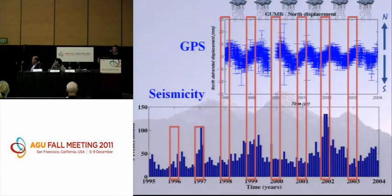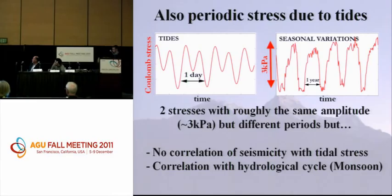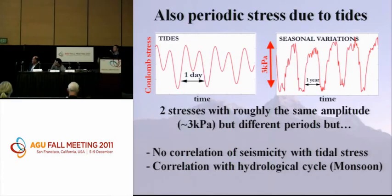The first is the seasonal variation — stress as a function of time, periodic with a period of about a year. The second is due to Earth tides — the moon and the sun also deform the crust and create stresses on the fault. In our case, those stresses are about the same amplitude as the monsoon, but the period is very different: only half a day or one day versus one year. We're talking about really tiny stress variations — about 3 kilopascal, which is roughly a hundred thousandth of the 500 megapascal background pressure where earthquakes happen. Yet those small variations appear enough to trigger seismicity.